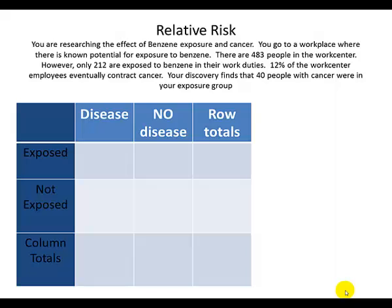Relative risk is the process by which we calculate or quantify the amount of risk due to an exposure. In this example we'll show you how to calculate that relative risk. You're researching the effect of benzene exposure and cancer. You go to a workplace where there is a known potential for exposure to benzene. There will be some people in this group that were exposed, but not everybody in that workplace will be exposed, so we'll have some people in the non-exposed group.